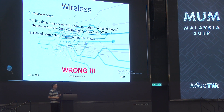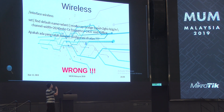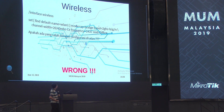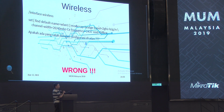Next problem: wireless. Who can see what's wrong with this configuration? This is the most common configuration done by most engineers. There are two mistakes here. First: 2 GHz BGN mode — that's the first mistake. The second mistake: channel width 20/40 MHz.